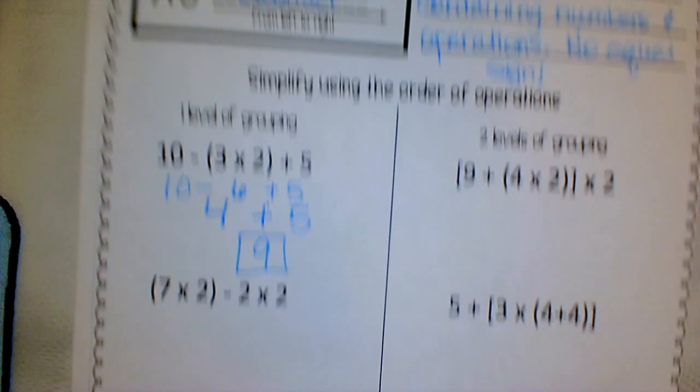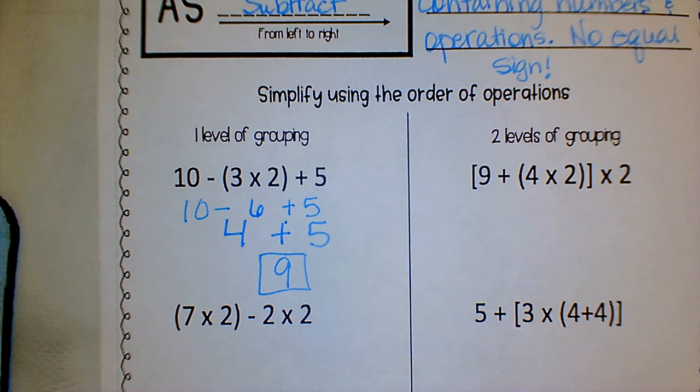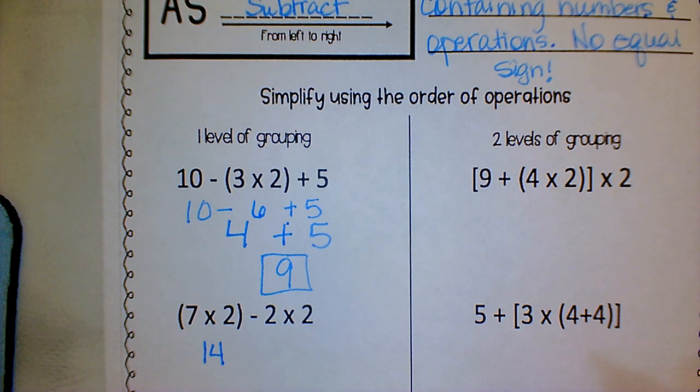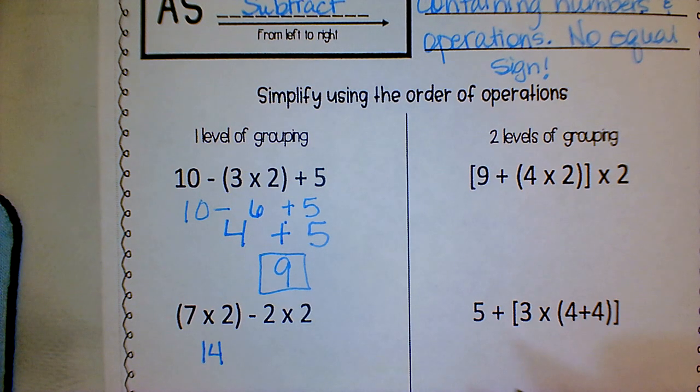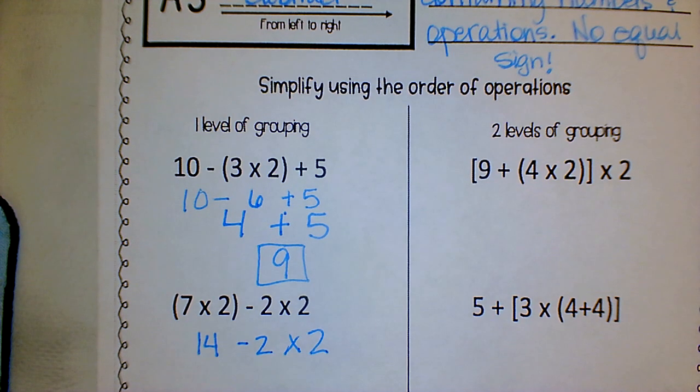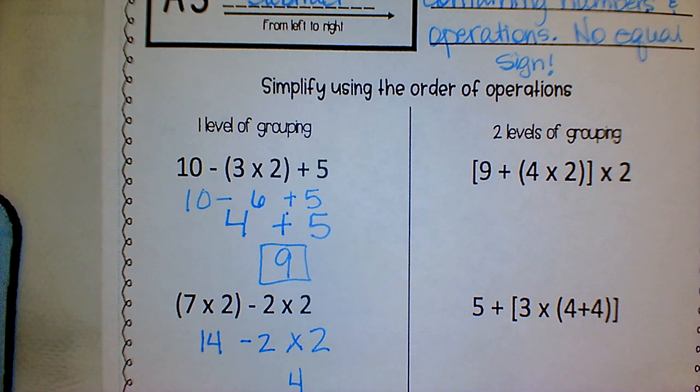The next one is seven times two in parentheses minus two times two, no parentheses. So what comes first? Seven times two. What's seven times two? Fourteen. What am I going to do next? What comes after writing fourteen? Two times two. Minus two times two. So do I do 14 minus two first or do I do two times two first? Two times two. Very good. Multiply and divide first. So what is two times two? Four.